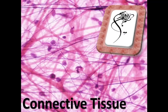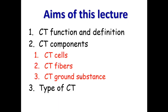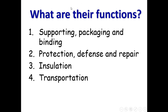The second basic tissue in our body is connective tissue. In the background you see a real picture from connective tissue showing the cells and the extracellular matrix. At the end of this lecture you will be able to define connective tissue, state its functions, understand its components like cells, fibers, and ground substance, and also classify connective tissue.